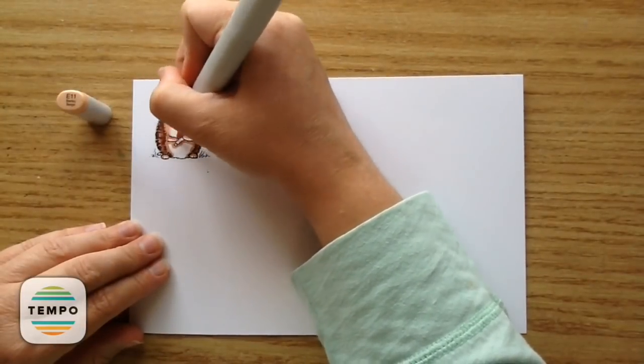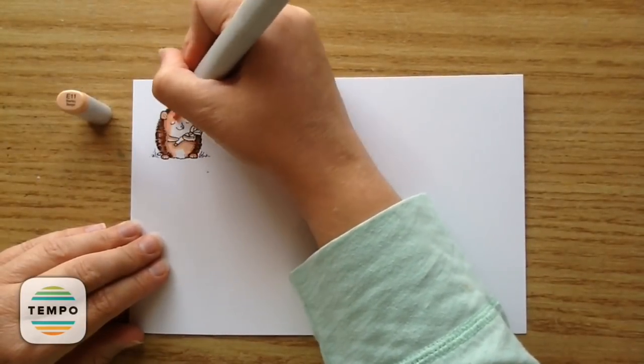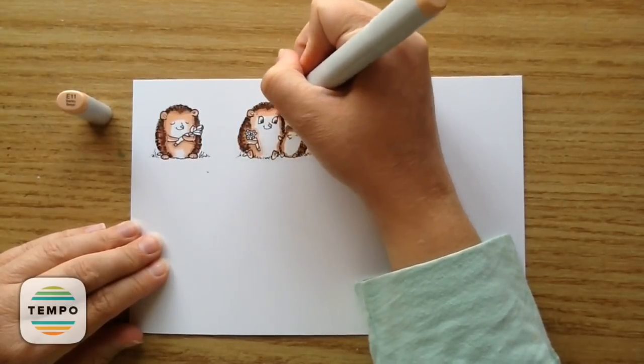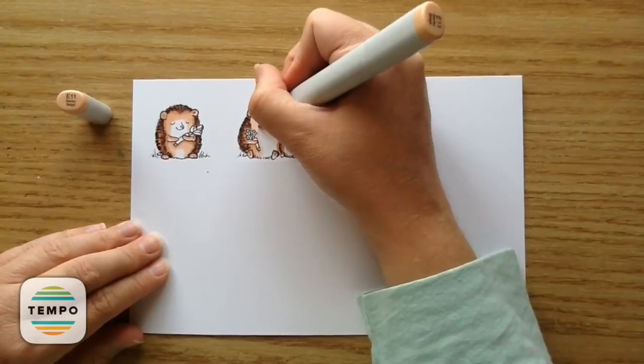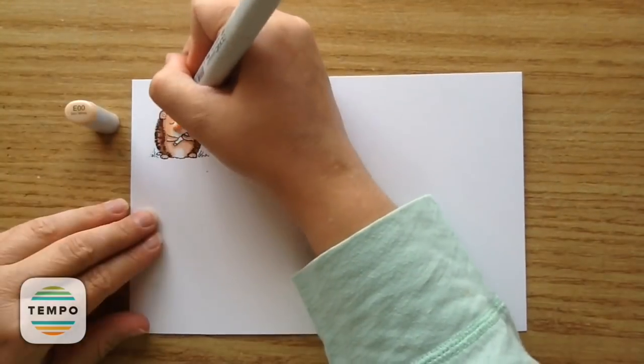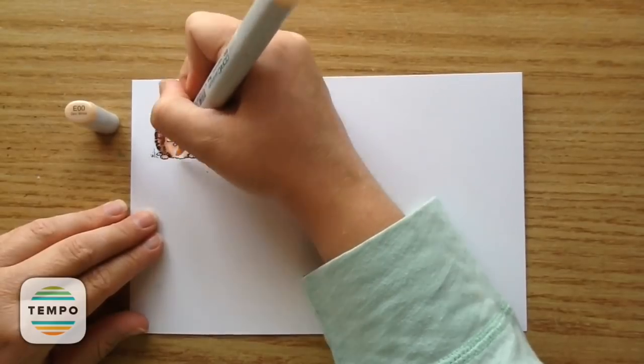And then I'm gonna go in with E11 to add a little bit lighter. I think this cute little one where there's like the mama and the baby hedgehog would be so cute for Mother's Day cards. It would also be cute for Grandmother's Day cards or just really any occasion. But I just think those would be so cute for Mother's Day.